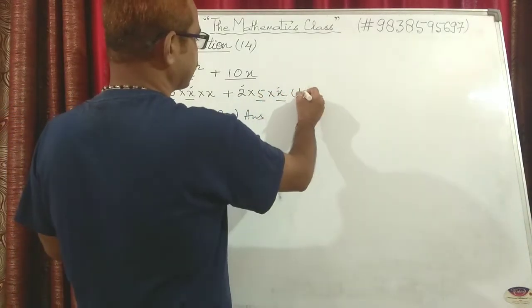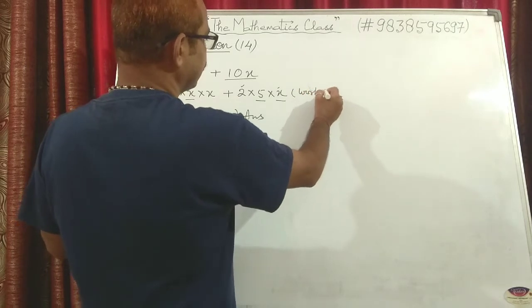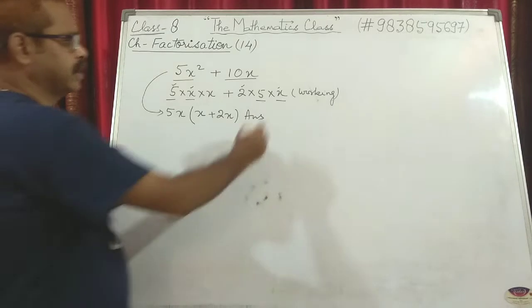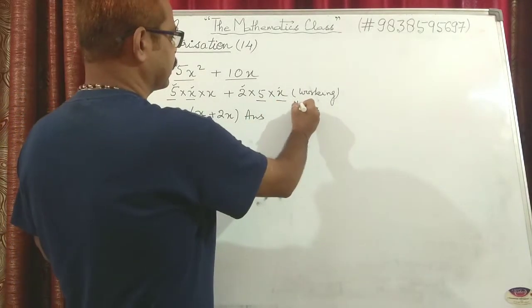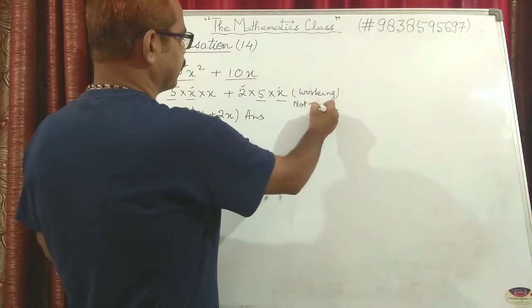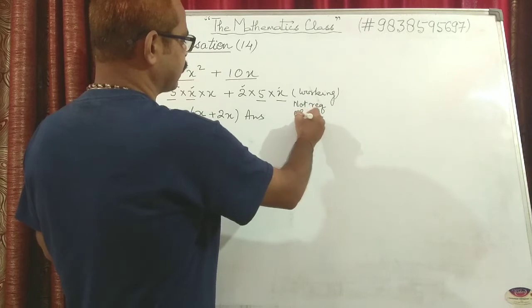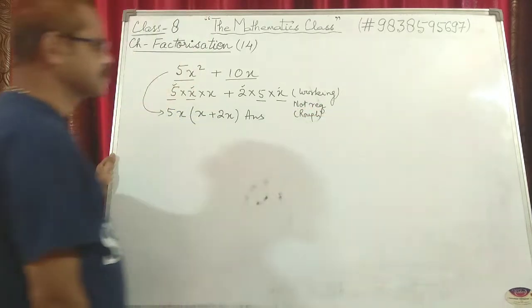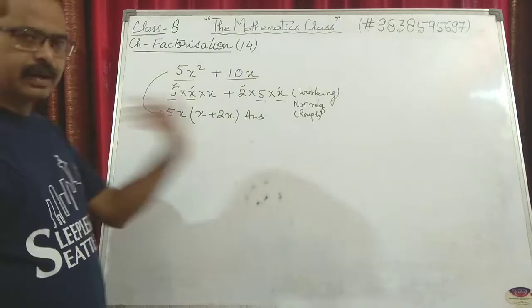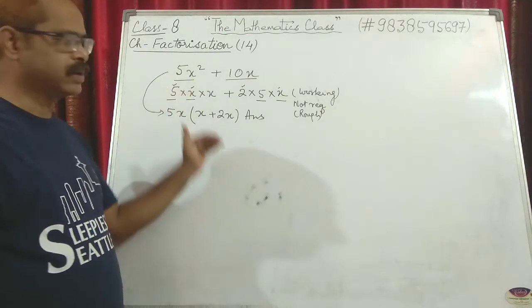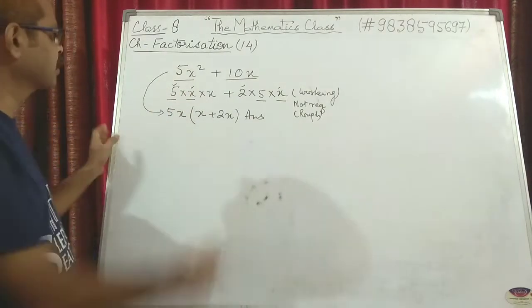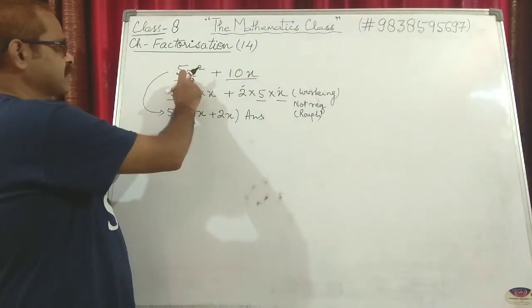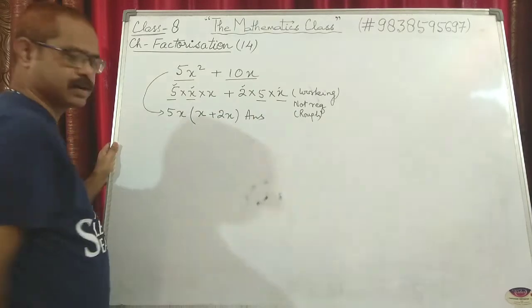This working is generally rough work or mental calculation. When you practice many questions you will be able to make out: from this we can take 5 common, from this we can take x common, so x is left and 2x is left — that's the answer.